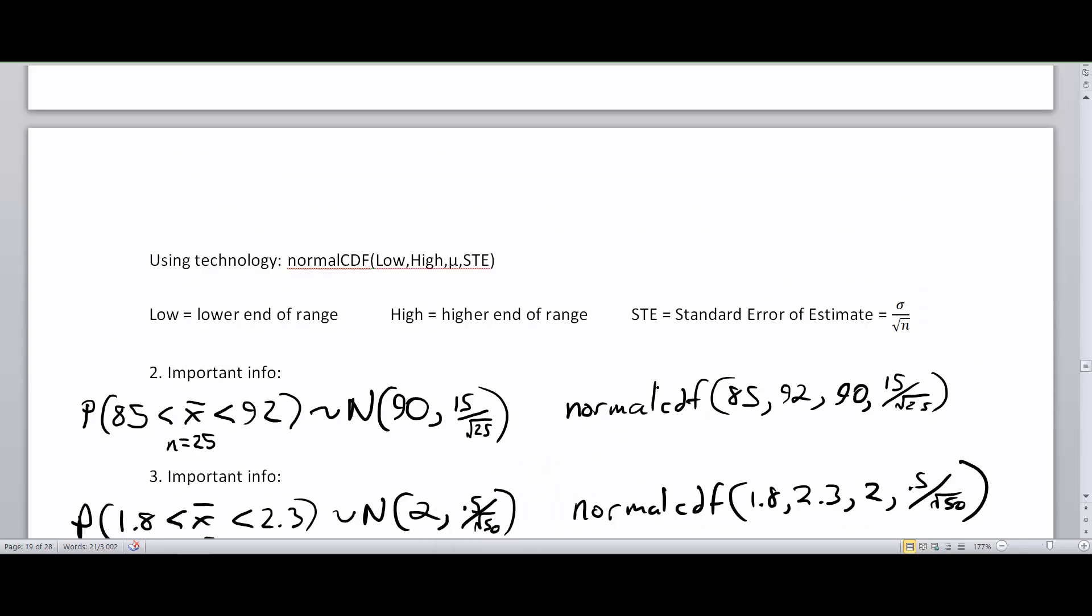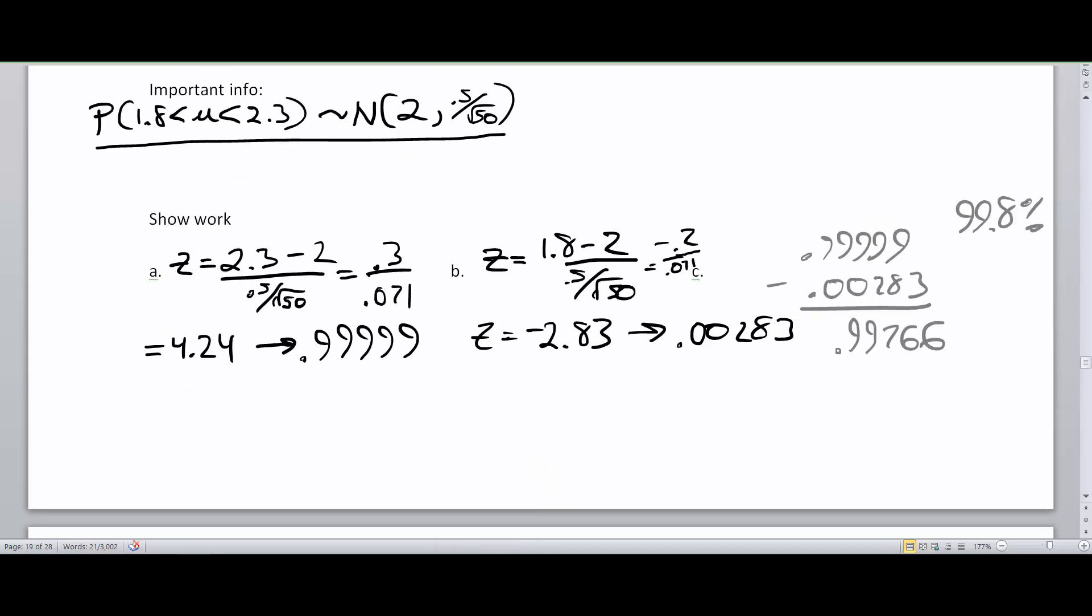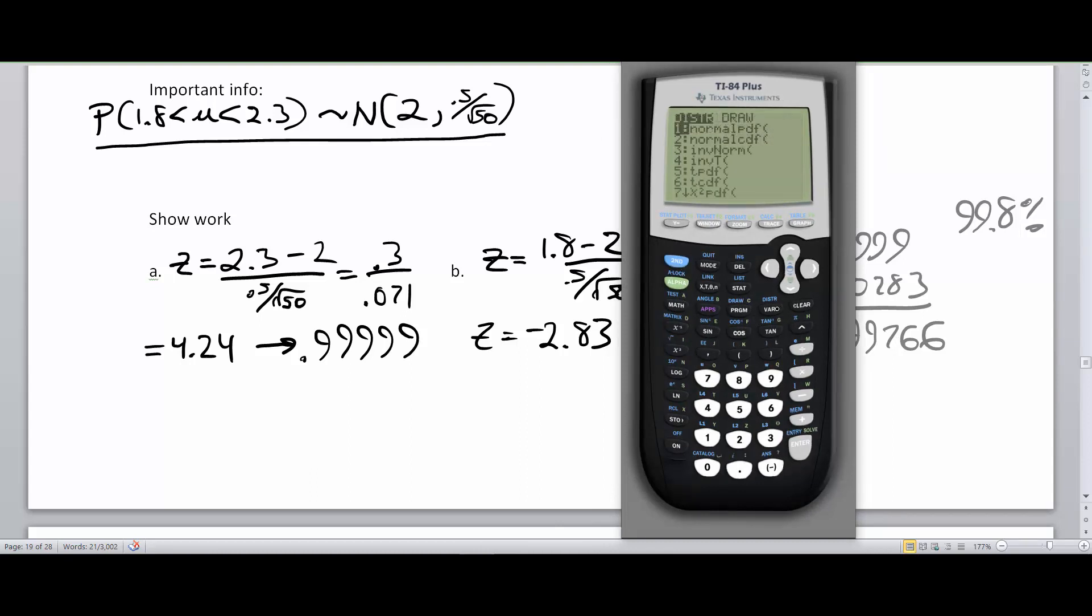Here we go back to the calculator and the previous page. So there was our answer 99.8. Let's go second vars, click down to normal CDF. My lower number is going to be 1.8, and then I'm going to go 2.3. My average is 2, and then let's go with my proper standard deviation. 0.5 divided by the square root of 50. What I love about this is that you don't have to do any work. It's just typing the stuff in, knowing what you're doing. And since we've done it by hand now, probably over a dozen times, you can now let the calculator take some of that load off of you. And look at that, 0.9976 or 99.8%. Feels so good. Thank you, Mr. Calculator.